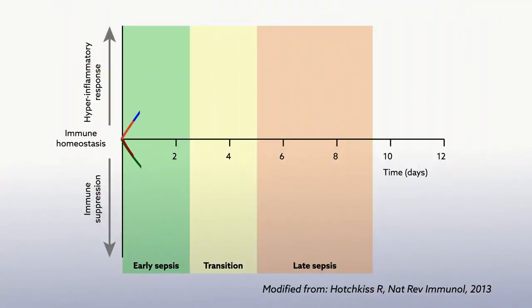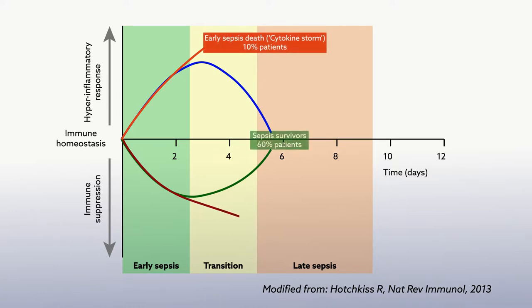But recently, doctors have discovered that sepsis is more complicated, and if someone survives this early hyper-inflammatory stage, they are still at risk of succumbing later when the syndrome switches over to being immune-suppressive.